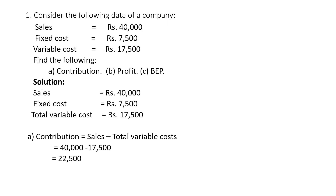See the problem. Consider the following data of a company: sales 40,000, fixed cost 7,500, variable cost 17,500. Find the following: contribution, profit, and break-even point. According to the problem, the sales is equal to 40,000, fixed cost 7,500, and variable cost 17,500. First, calculation of contribution.